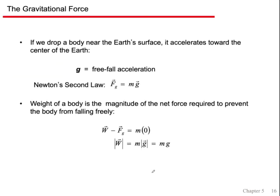On Earth, if you drop an object you get g, the free-fall acceleration. From Newton's second law, the weight of an object is the magnitude of net force required to prevent it from falling freely, which is just m times g. This mass is technically called gravitational mass — not inertial mass. And interestingly, gravitational mass and inertial mass are identical in our universe. They would not have to be, but they are.